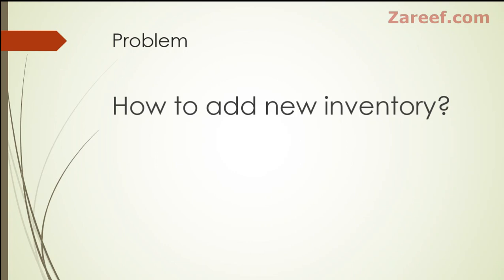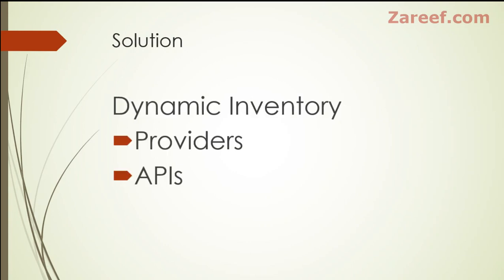There is a problem: in an agentless kind of system, how can we add new inventory? Suppose there are five new servers which need to be added to the whole system — how will we add those inventories? There are two ways: number one, we can obviously update the static content or text file, and another way is what we call dynamic inventory.